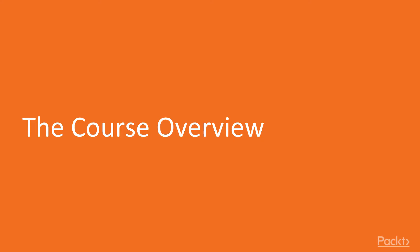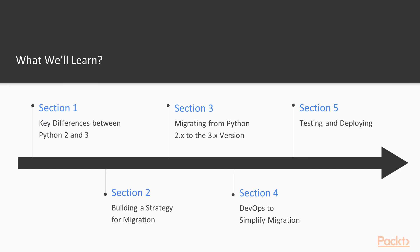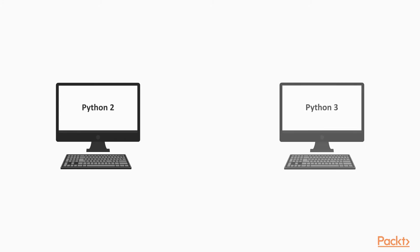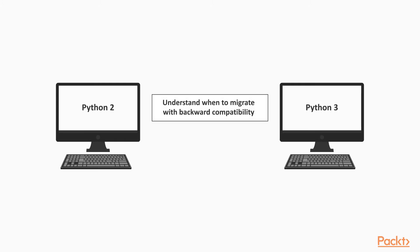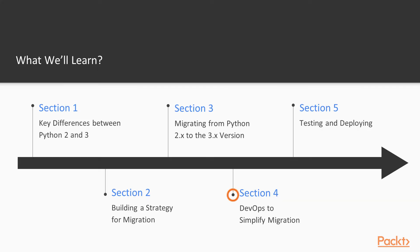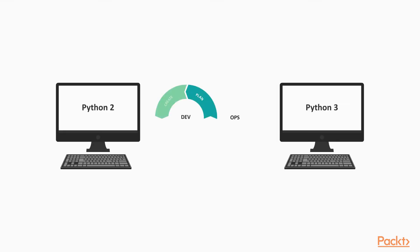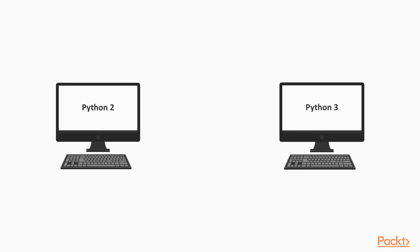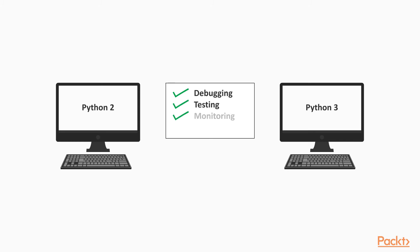Let's now see how the course is going to be organized. We're going to have five sections. The first one will introduce the differences between Python 2 and 3, and the breaking changes between them. In section 2, we will see what's a great building strategy for migration, optionally maintaining backward compatibility. In section 3, we're going to see how to migrate your code from Python 2 to Python 3. In section 4, we will see a DevOps approach to simplify migration, tips and tricks. Finally, section 5 will be about testing, deploying, monitoring, and debugging your code.